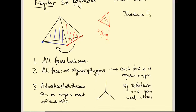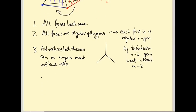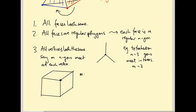So the question is: what values of m and n could we possibly have? For the tetrahedron, n equals 3 (triangles) and they meet in threes, so m equals 3 as well. For a cube, we have three squares meeting at each vertex — three four-sided shapes meeting at each vertex — so m equals 3 and n equals 4. We need to put constraints on the values of m and n.